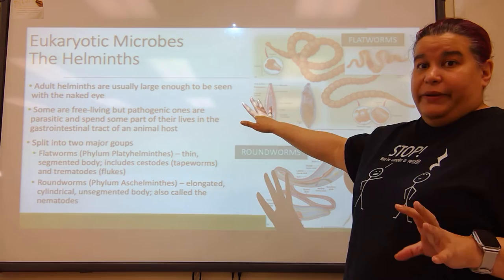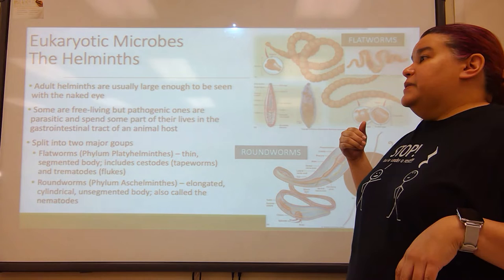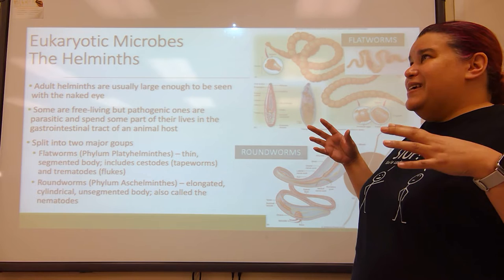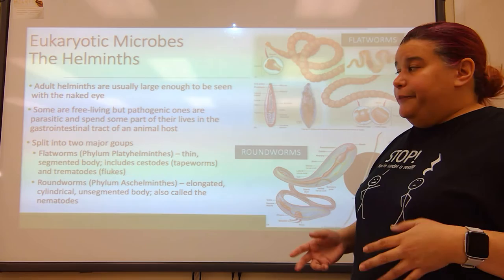Eukaryotic microbes — the helminths. Adult helminths are usually going to be large enough that you can see them with the naked eye. Some are free living, but others are pathogenic. They can be parasitic, and they spend some part of their lives inside the gastrointestinal tract of an animal host, inside an intestine somewhere.